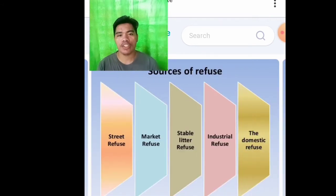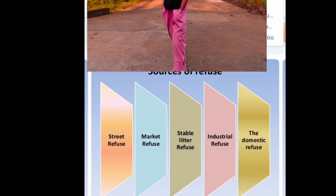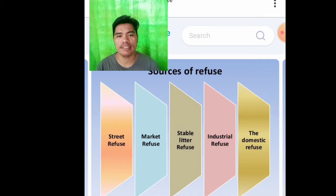Sources of refuse. There are five sources: street refuse, market refuse, stable litter refuse, industrial refuse, and domestic refuse.